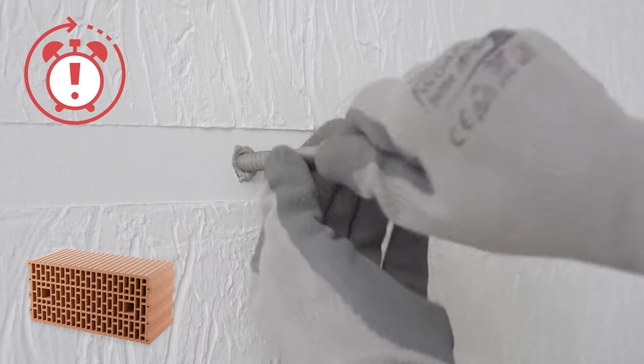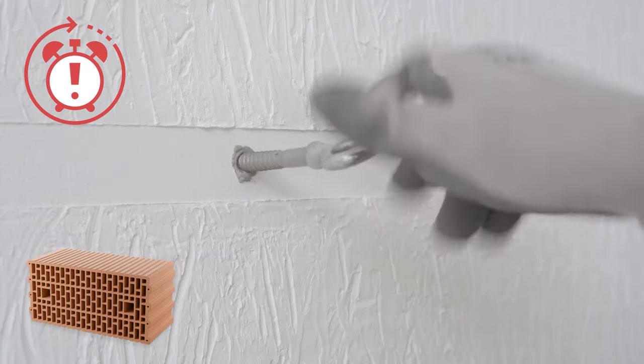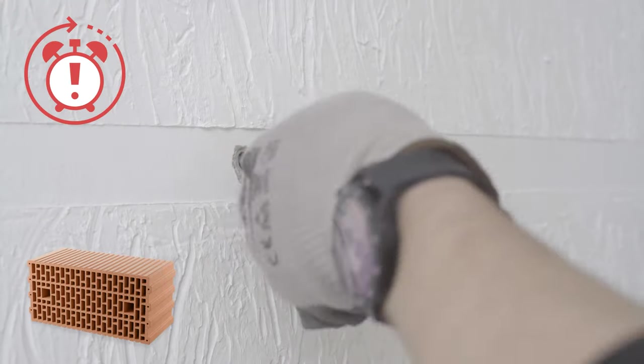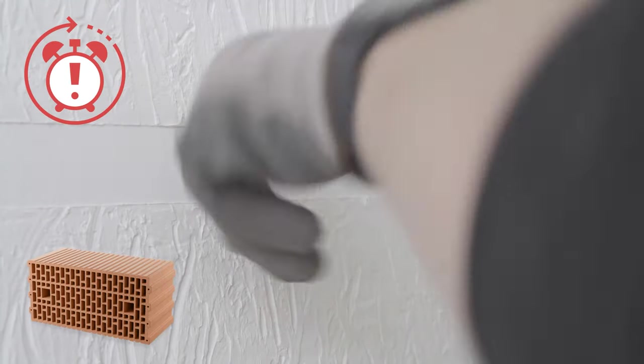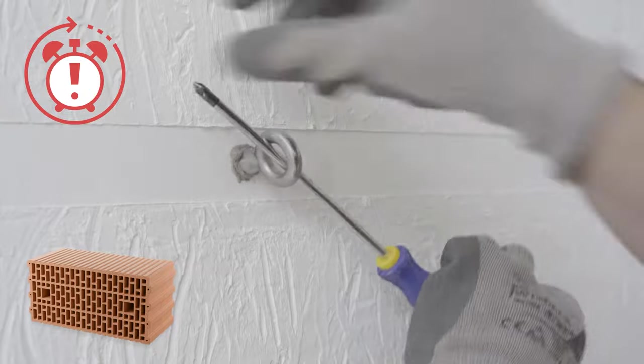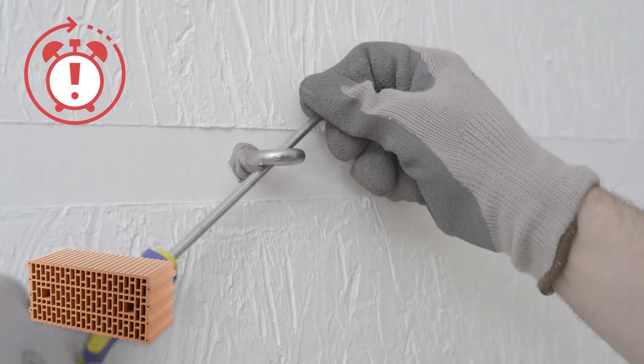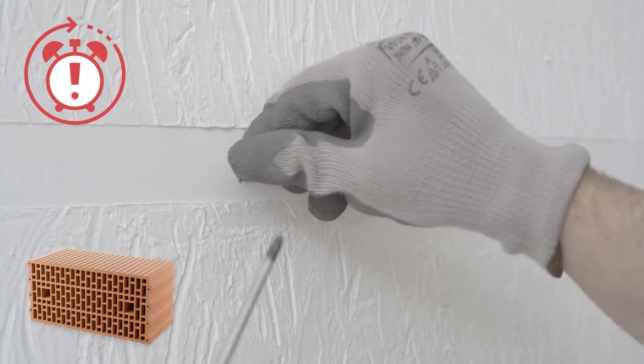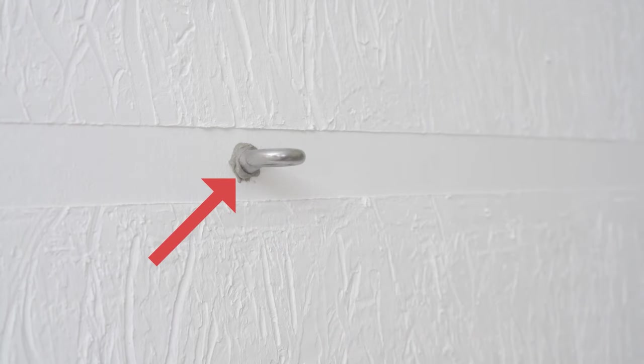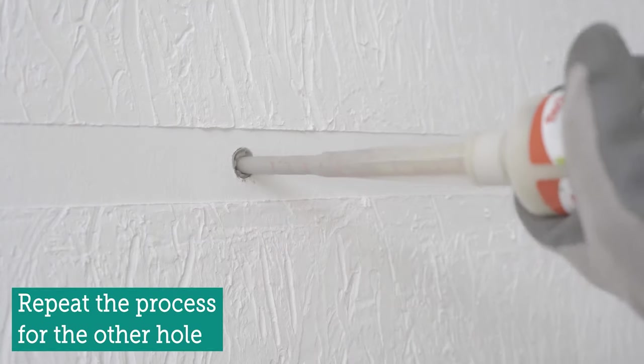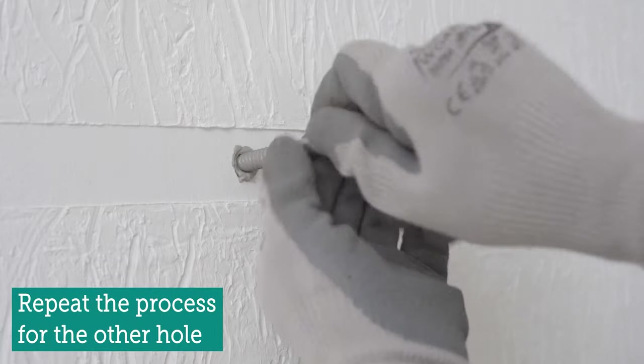Now we screw the bolt into the hole clockwise with pressure. At warm temperatures, we must remember that the mortar hardens more quickly, so we must work swiftly. Don't worry about oozing excess mortar and please don't wipe it away in a liquid state. We will deal with this later. We will now repeat the same process for the second hole.